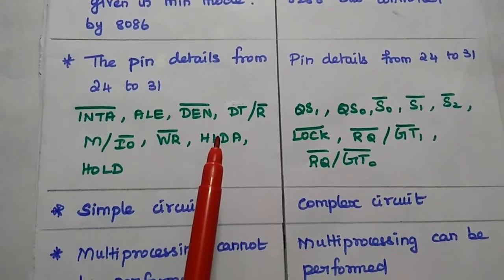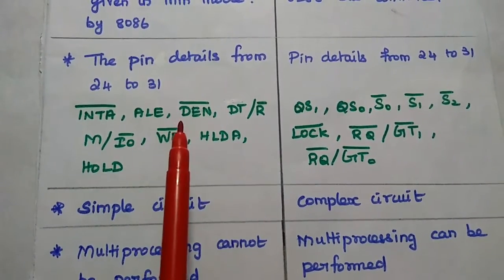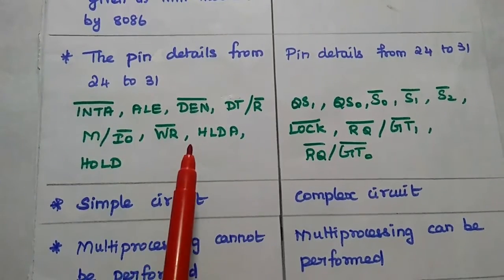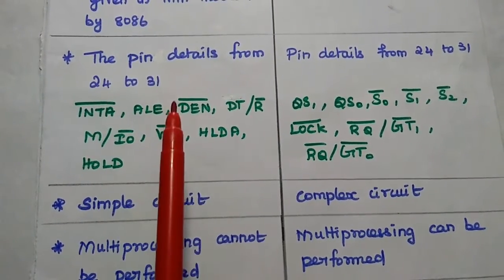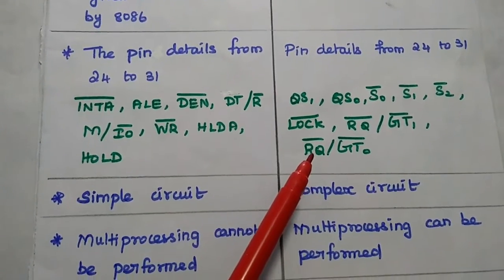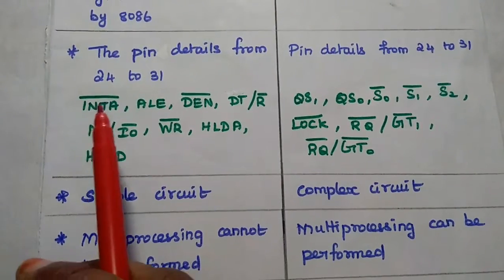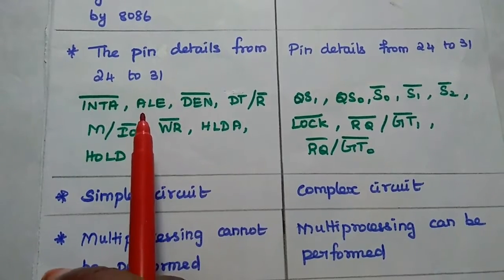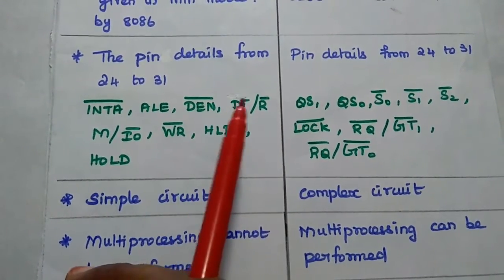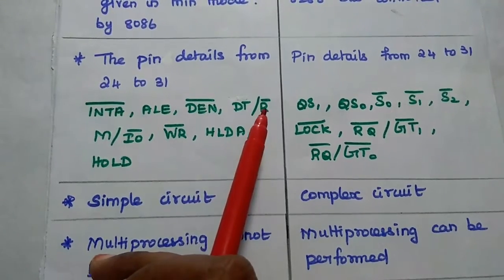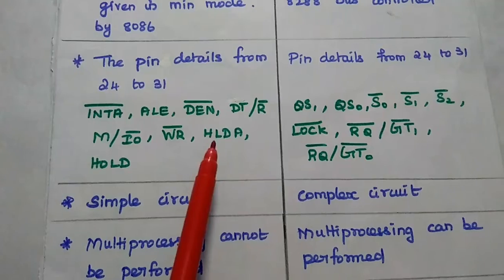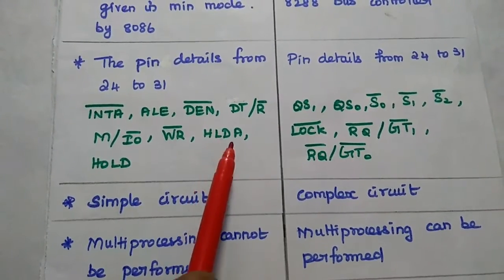The next one is pin details from 24 to 31. We can have 8 different signals from 24 to 31 for minimum mode as well as maximum mode. Here it is interrupt acknowledgement bar, ALE that is address latch enable, data enable, data transmit or receive bar, memory or input-output bar, write bar, HLDA that is hold acknowledgement, and hold signals.